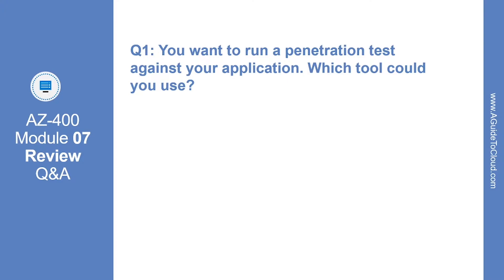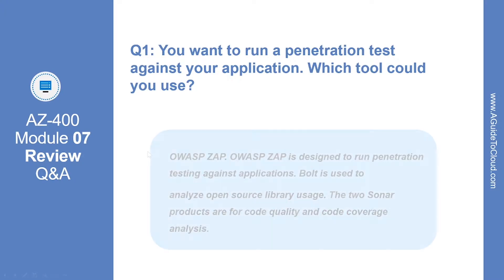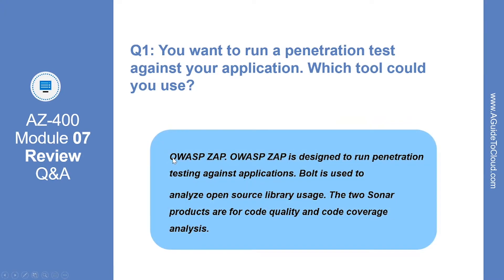Let's look at the first question. You want to run a penetration test against your application. Which tool could you use? The answer is OWASP ZAP. This is designed to run penetration testing against applications. Bolt is used to analyze open source library usage, and the two Sonar products are for code quality and code coverage analysis.